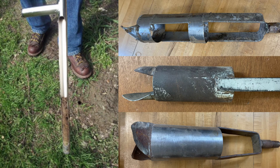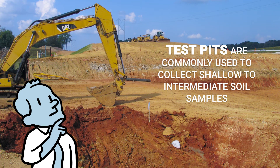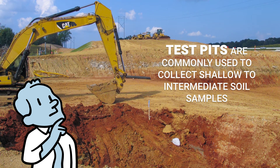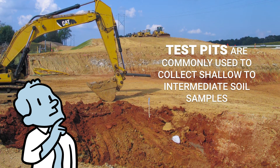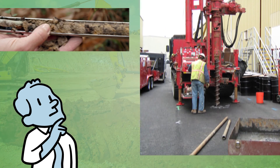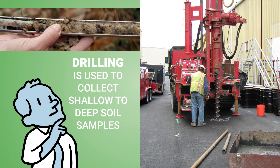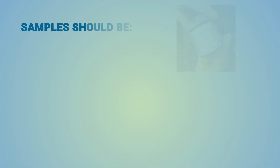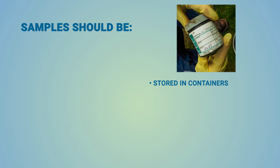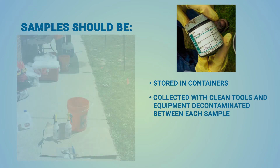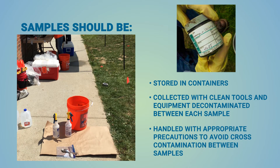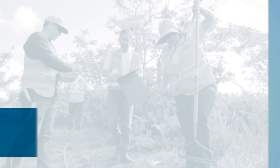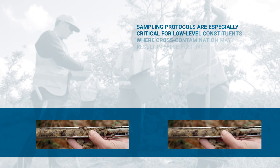Surface and shallow soil sample collection typically uses hand-push probes or augers. These tools generally cause minimal site disturbance and are low cost. Test pits are commonly used to collect shallow to intermediate soil samples; samples are collected from the bucket of excavation equipment such as a backhoe, which requires a high level of soil disturbance and a moderate cost. Drilling is used to collect shallow to deep soil samples in all types of geologic material, which requires a moderate level of site disturbance and higher costs. Samples should be stored in containers preserved as required by the analytical method, collected with clean tools and equipment decontaminated between each sample, and handled with appropriate precautions to avoid cross-contamination. Sampling protocols are especially critical for low-level constituents where cross-contamination may result in false positives.